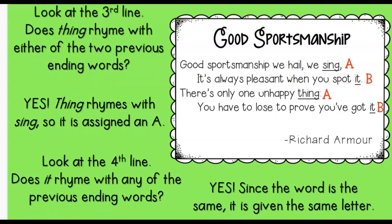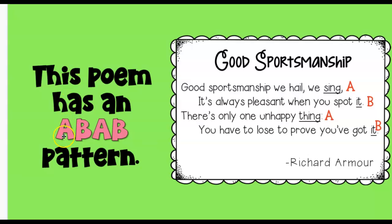Let's continue. Now let's look at the third line: thing. Thing doesn't rhyme with it, but does thing rhyme with sing? Yeah. So because it does, and we labeled sing as A, this will also be A. Now we're going to look at the fourth word, it. Does it rhyme with sing? Nope. Does it rhyme with it? It does. So we're going to label that B. So this poem has an A, B, A, B pattern, because it's sing, thing, it, it.